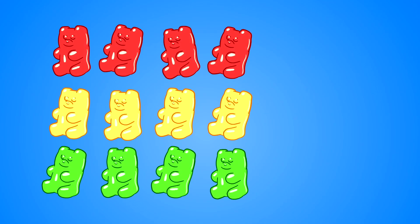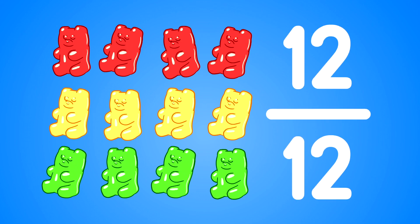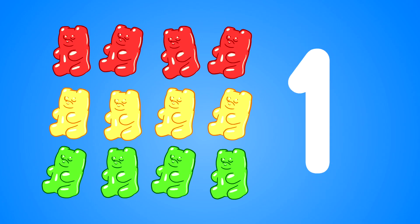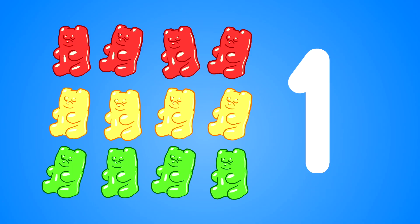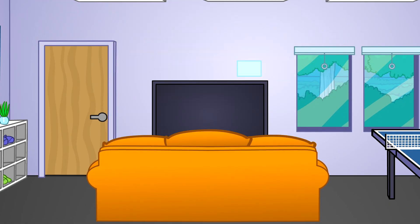This is kind of tricky. All of these gummy bears are in color. So I'm going to say twelve-twelfths are in color. Good job, Dennis! Or you can say one whole set is in color. If the numerator and the denominator are the same number, that's the same thing as describing one whole object or set. So twelve-twelfths equal one. Good job, Dennis.